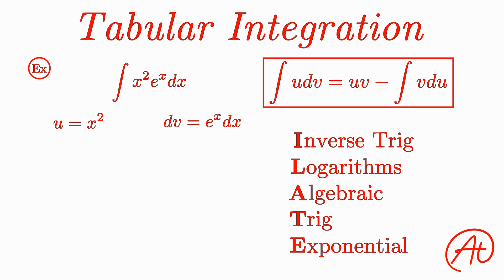To find du, we can take the derivative of u to get that du dx is equal to 2x from the power rule. Then multiplying both sides by dx, we get that du is equal to 2x dx.